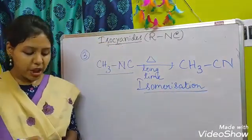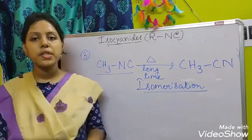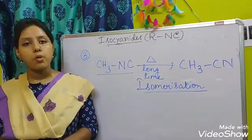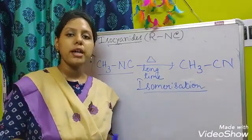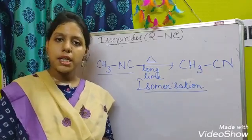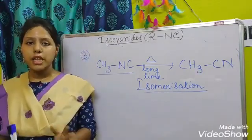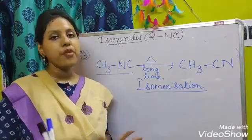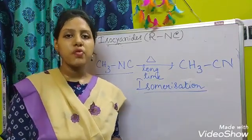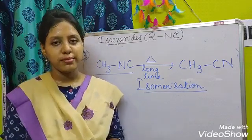These are all the reactions of isocyanides. You also need to read the physical properties of isocyanides from the notes. Isocyanides show a lower boiling point than cyanides because of their lower dipole moment. You should also learn the chemical properties, the uses of cyanides and isocyanides, and the differences between them — that question is also very important. In the next video we will learn about nitro compounds. Thank you everyone for watching this video.